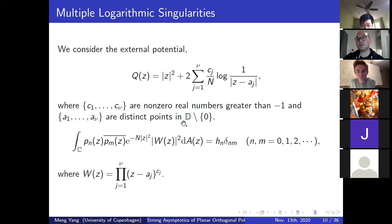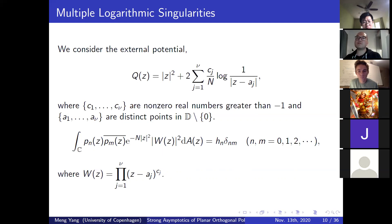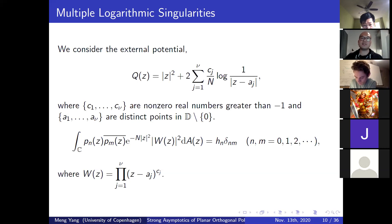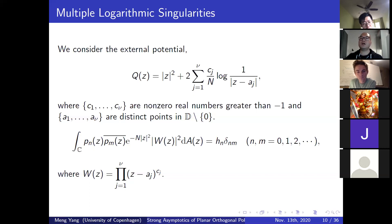As N goes to infinity, Q converges to the Gaussian weight, which is why we call it a perturbation of the Ginibre ensemble. For N equal to one, we do not place A at the origin, but for N greater than one, one of the A_j's can be at the origin. Because of the explicit formula for Q, we rewrite the orthogonality condition using the function W(z), which is the product of (z - A_j)^{C_j}. Since the C_j's are nonzero real numbers, W(z) is not yet well-defined, so we must choose branch cuts for all branch points A_j.